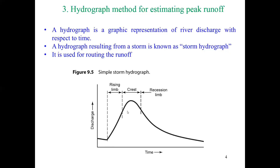The increasing trend is called the rising limb. The peak point is the crest where we get peak flow, and the decreasing portion is called the recession limb. From this plot we can get discharge at any time — we can draw a line at any point to read the discharge value, so we are routing the runoff using this hydrograph.